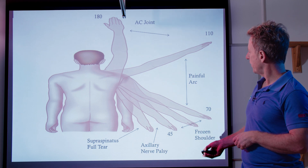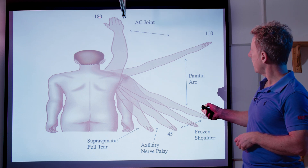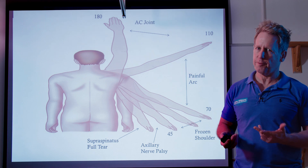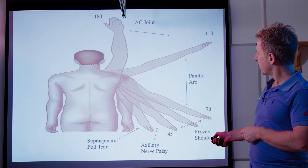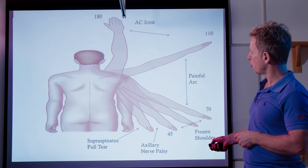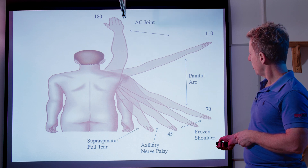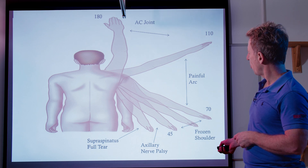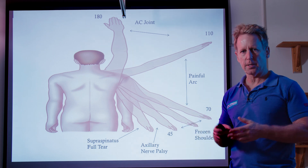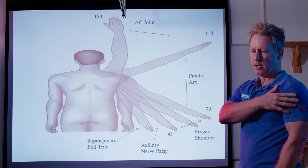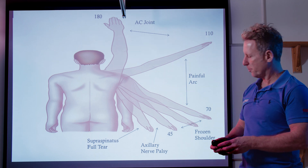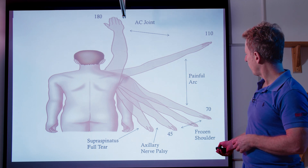When a person is lifting their arm from 0 to 180 degrees and feels something, there are various possibilities. An inability to abduct could indicate a full tear of the supraspinatus. You might find an axillary nerve palsy — if they've dislocated the shoulder, it's relocated, but the deltoid is now switched off — meaning they can't abduct very far, maybe around 45 degrees.